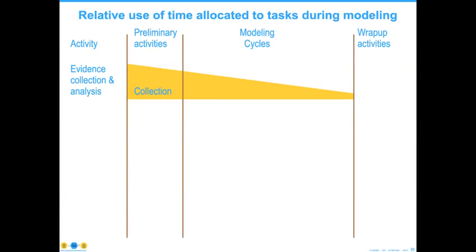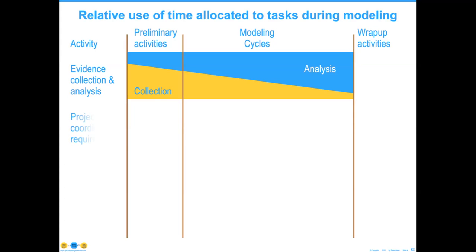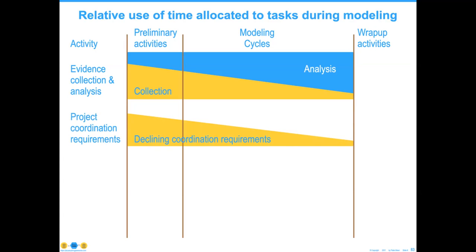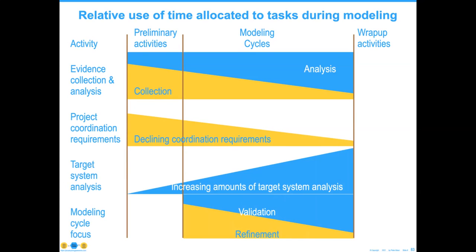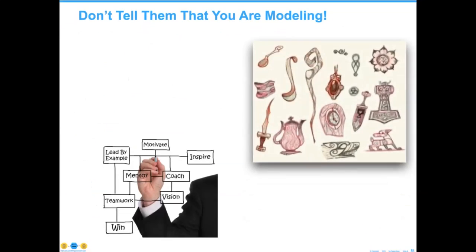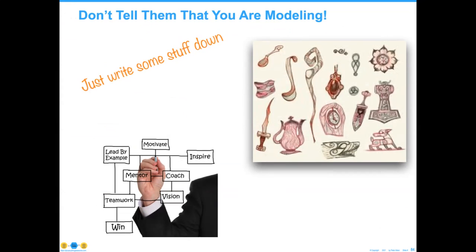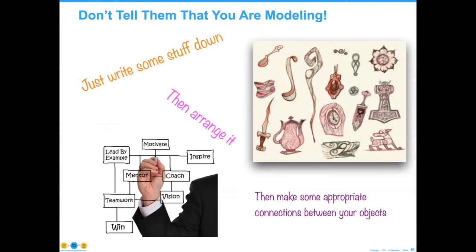The modeling tasks you take are going to start out and fall into some categories, including evidence collection and analysis — that should decrease as your modeling matures. You should do more analysis and less collection. You should see declining coordination requirements — who do I have to talk to, who haven't I talked to yet? In target system analysis, we should see increasing amounts of understanding what the system looks like. The modeling focus evolves over time from largely refinement to largely validation. Most of the time when people are doing data modeling, the model should be labeled as draft. Until validated, it's irresponsible to put them out there as complete.